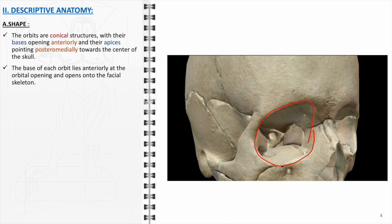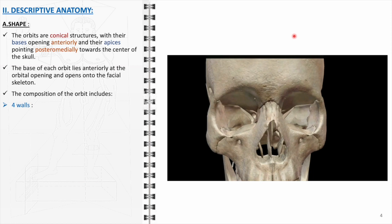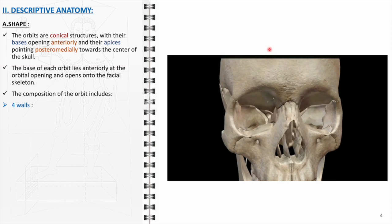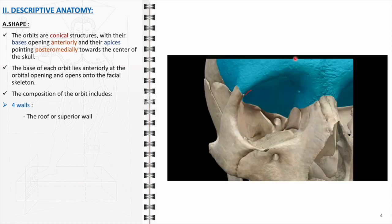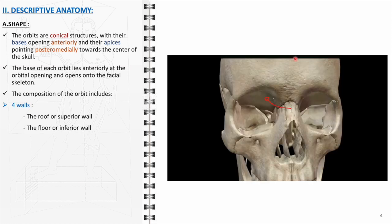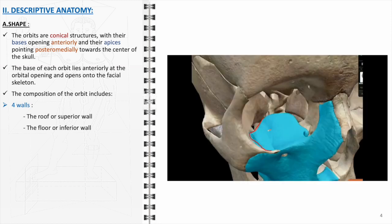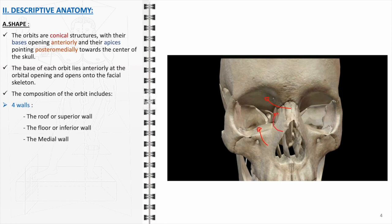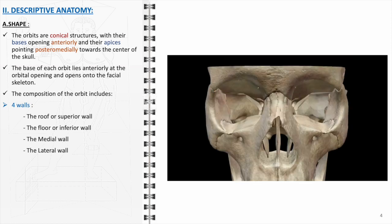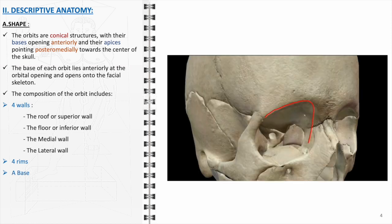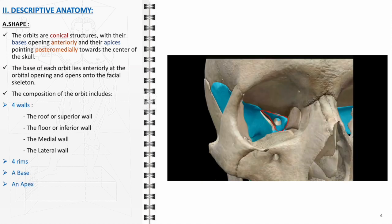The detailed composition of the orbit includes four distinct walls, each serving a specific structural and protective function. The superior wall, often termed the roof, forms the upper boundary of the orbital cavity, separating it from the frontal lobe of the brain. The floor or inferior wall creates the lower limit, supporting the eye. The medial wall, one of the thinnest, is situated near the nasal cavity, while the lateral wall, the strongest and most robust, shields the orbit from the temporal fossa. The apex serves as a convergence point for various nerves and vessels.